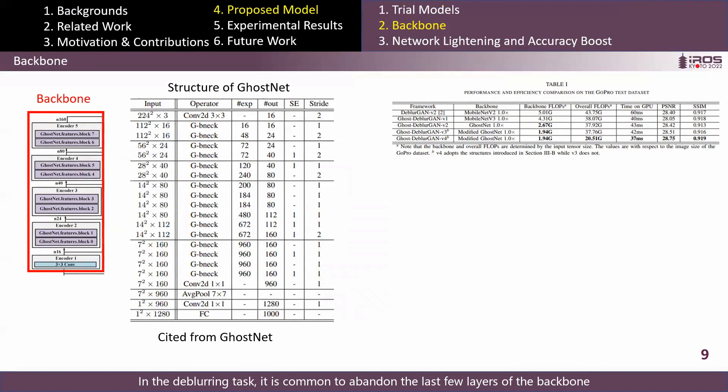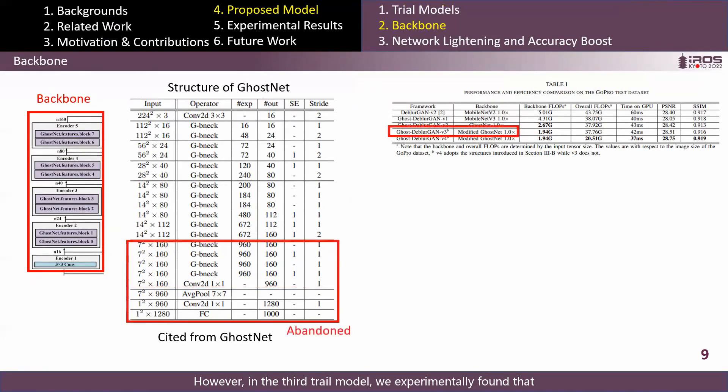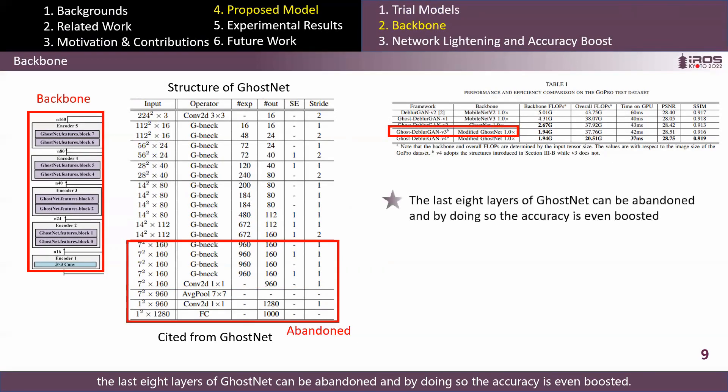In the deblurring task, it is common to abandon the last few layers of the backbone since these layers are originally developed for the image classification task. However, in the third trial model, we experimentally found that the last eight layers of GhostNet can be abandoned, and by doing so, the accuracy is even boosted.